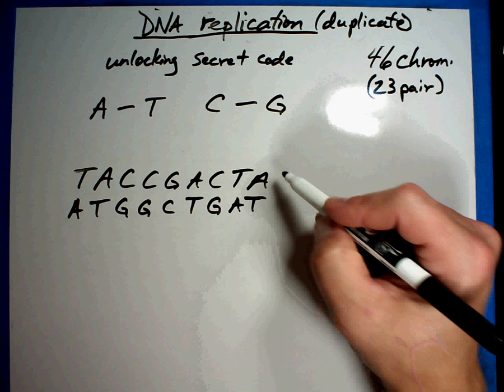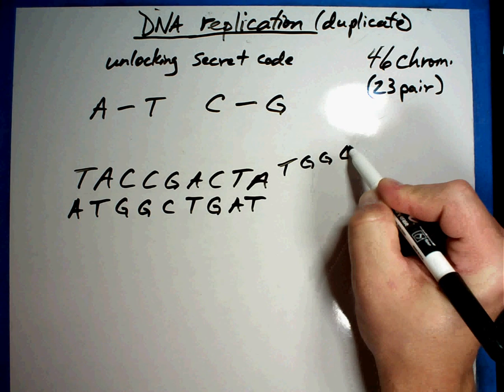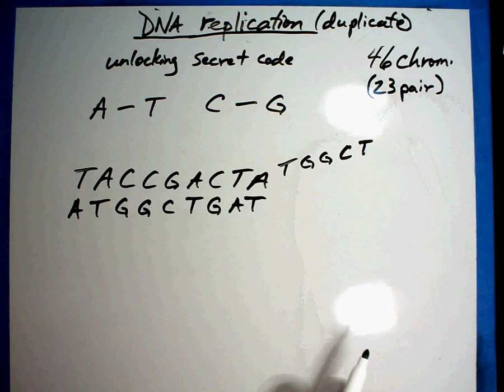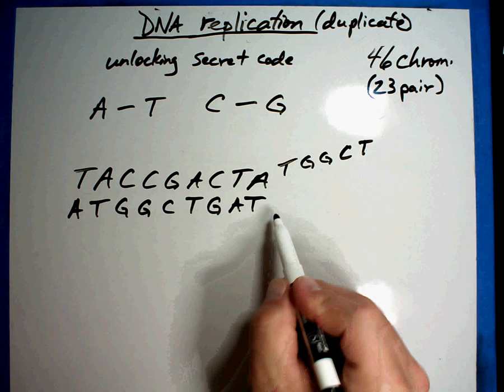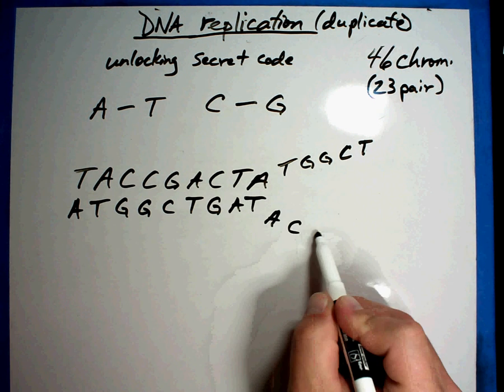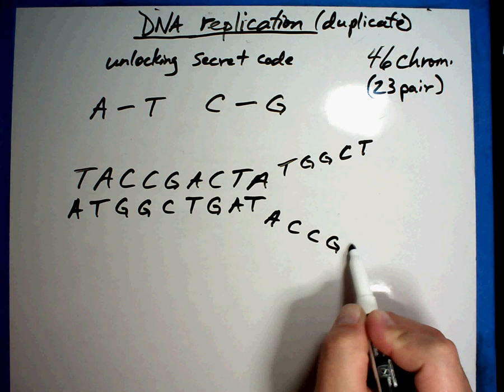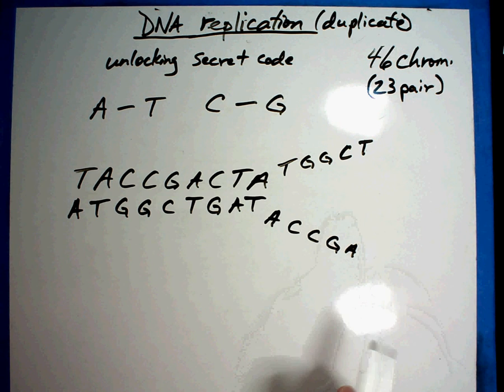So we're going to add something on here: T, G, G, C, T. We'll just take that. And so what would go with that would be A, C, C, G, A. You may want to pause real quick and get that in, get that picture.